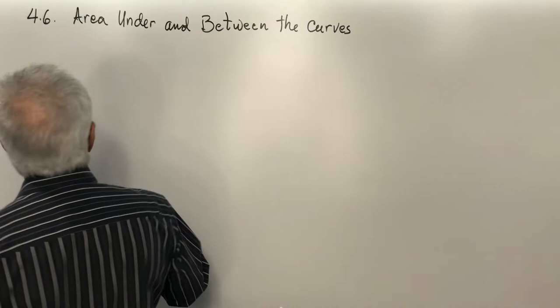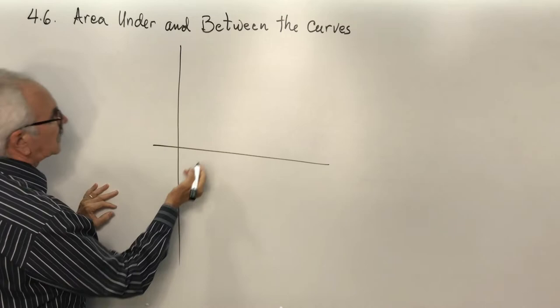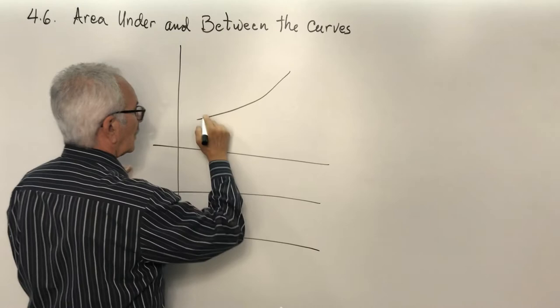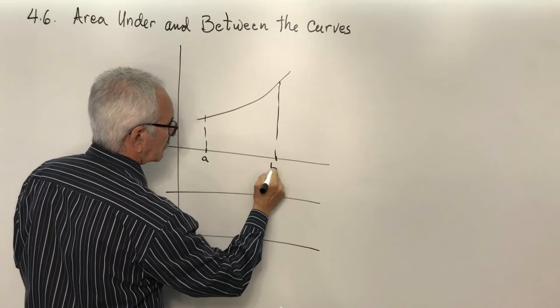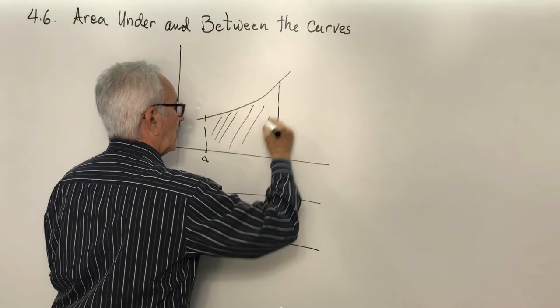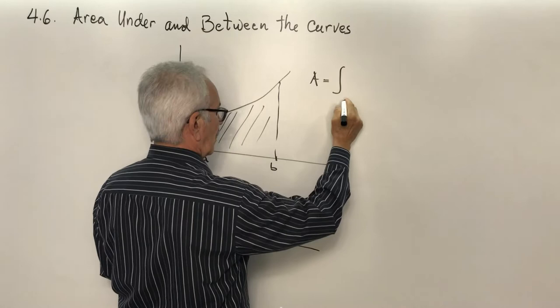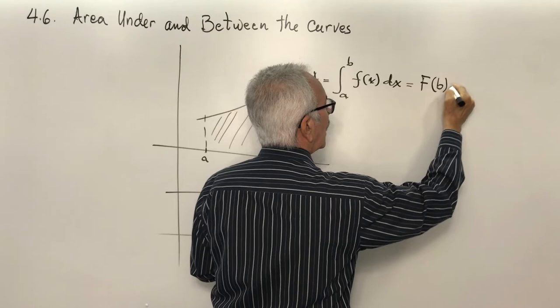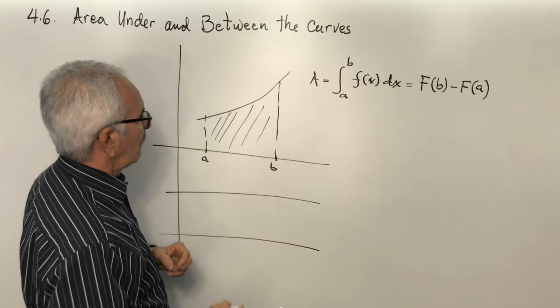Consider a function between A and B above the x-axis. The area in this case will be the integral from A to B of f(x) dx, which equals the antiderivative at B minus the antiderivative at A, according to the Fundamental Theorem of Calculus.